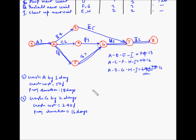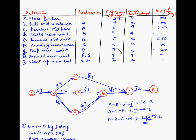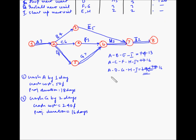Now if we want to crash the project further, we have two critical paths: A-C-F-H-I and A-D-G-H-I. Note that G has already been crashed by 2 days, so its remaining crashable time is reduced. Since we can't crash just one path while the other remains at 16 days, we have to crash both paths simultaneously.